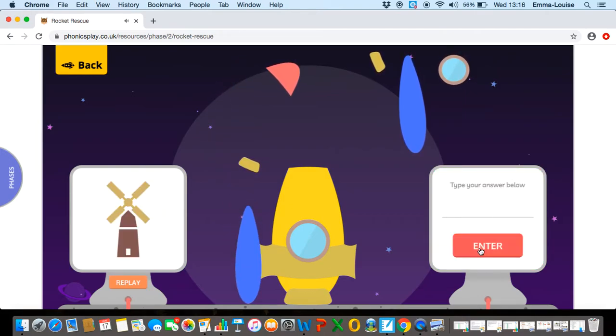Windmill. Oh, this is quite a long word. Let's break it down into two syllables. Wind and mill. Shall we sound talk wind first? W-i-n-d. Wind.